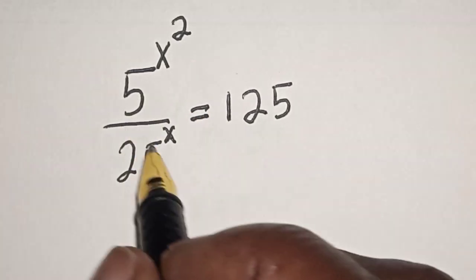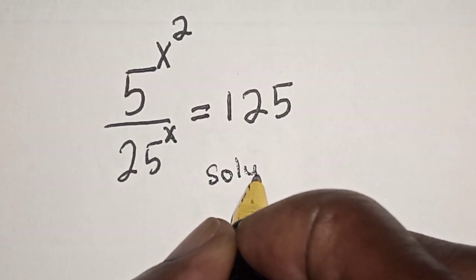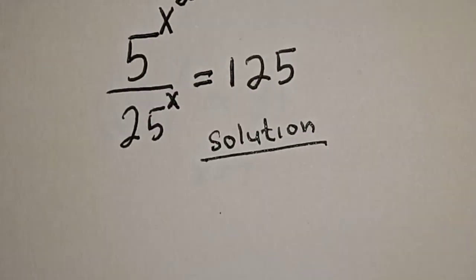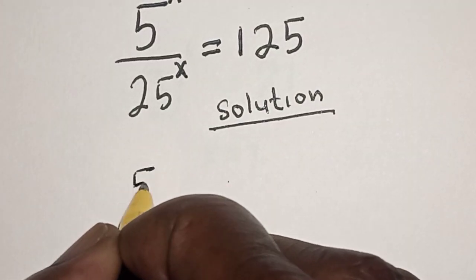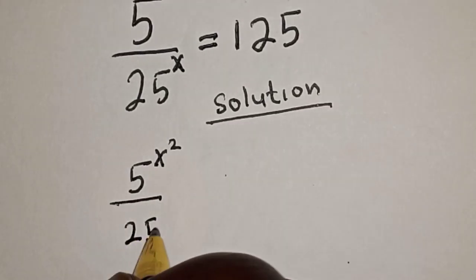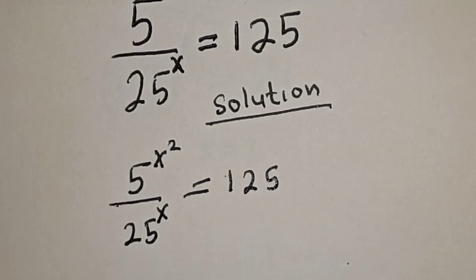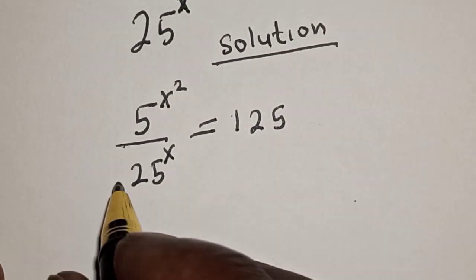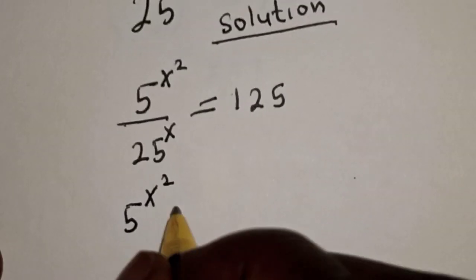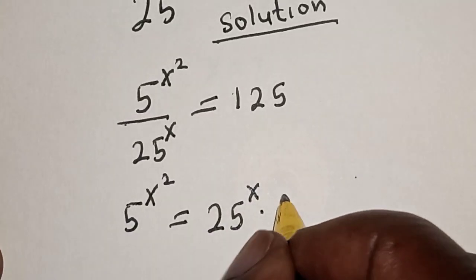But before we proceed — Solution. We have the given equation 5 raised to power s squared divided by 25 raised to power s, and this is equal to 125. Let's cross multiply. We have 5 raised to power s squared is equal to 25 raised to power s multiplied by 125.